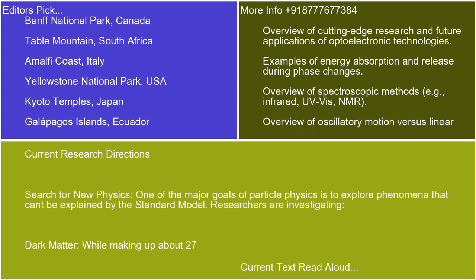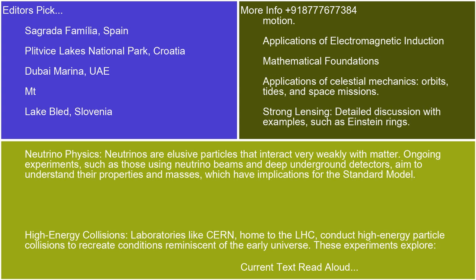Current research directions include the search for new physics. One of the major goals of particle physics is to explore phenomena that can't be explained by the standard model, including investigating dark matter. In neutrino physics, neutrinos are elusive particles that interact very weakly with matter. Ongoing experiments, such as those using neutrino beams and deep underground detectors, aim to understand their properties and masses, which have implications for the standard model.